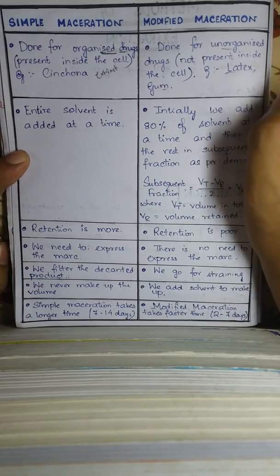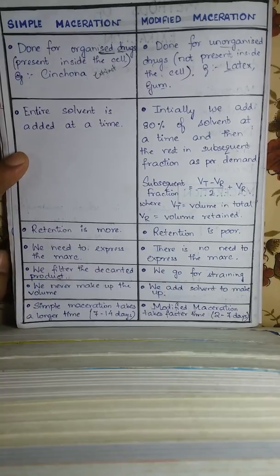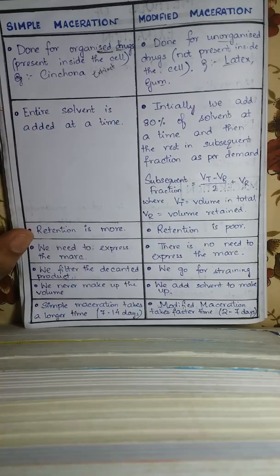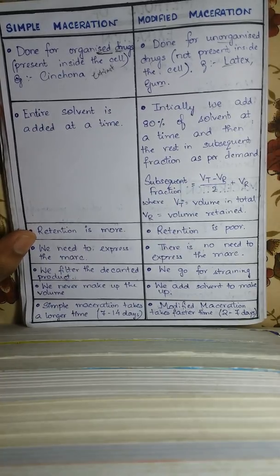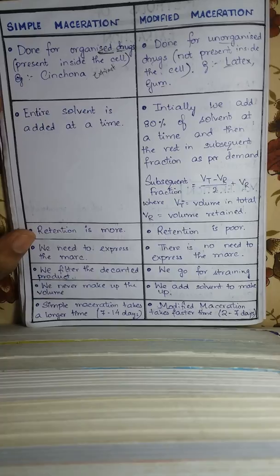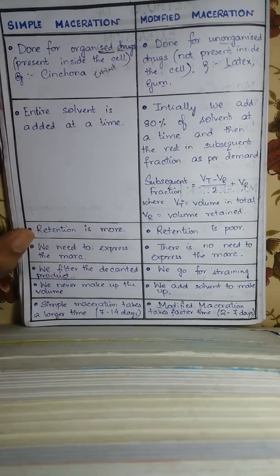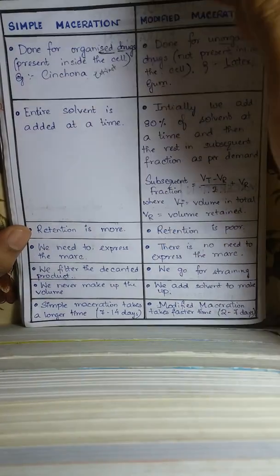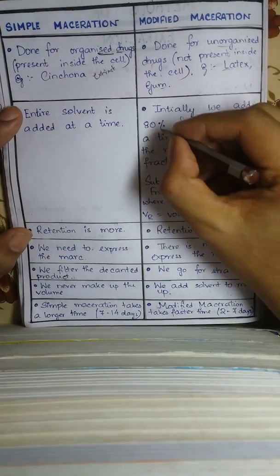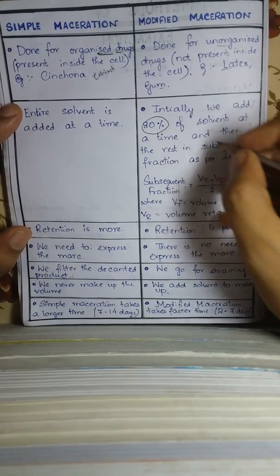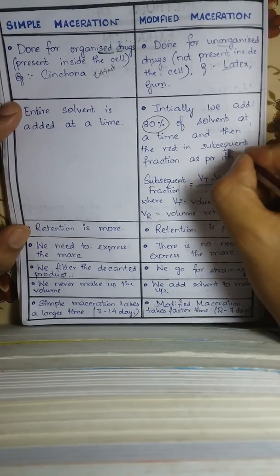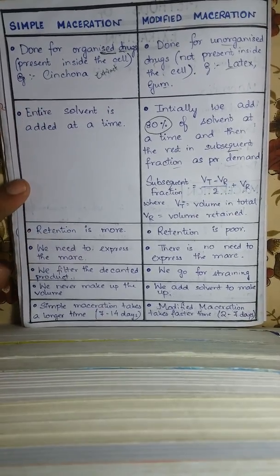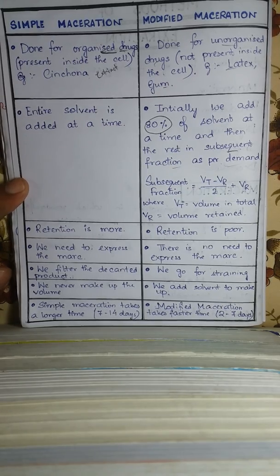In the case of simple maceration, the entire solvent is added at one time. In modified maceration, 80% of the solvent is added first and the remaining 20% is added in the subsequent fraction as per demand.